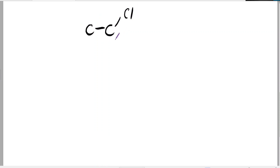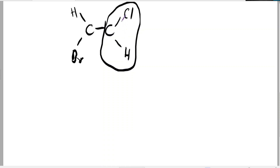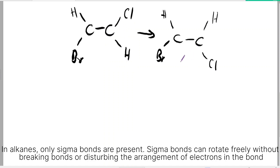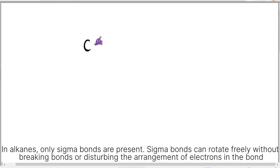In alkanes, you can simply rotate any side of the carbon atoms. So let's say I have chlorine and hydrogen on one side, and hydrogen and bromine on the other. When I rotate this side of the carbon atom freely, the molecule I get after rotating is the same compound — because no bonds or electron arrangement was disturbed in this transformation.